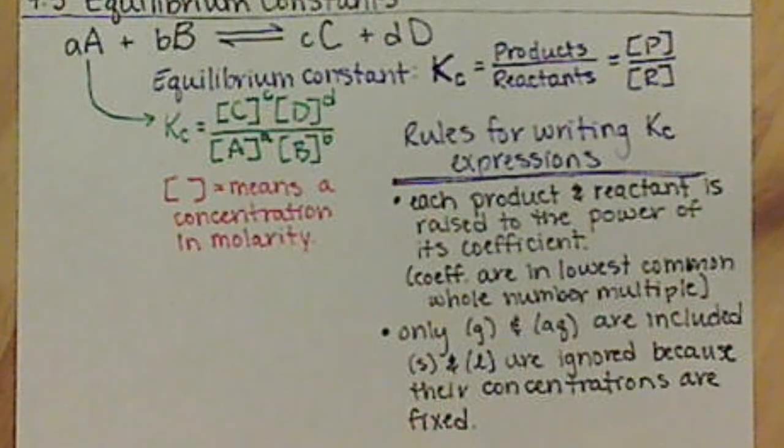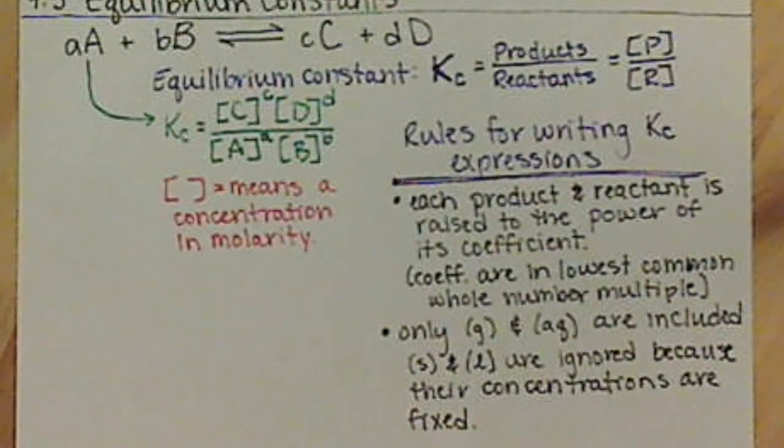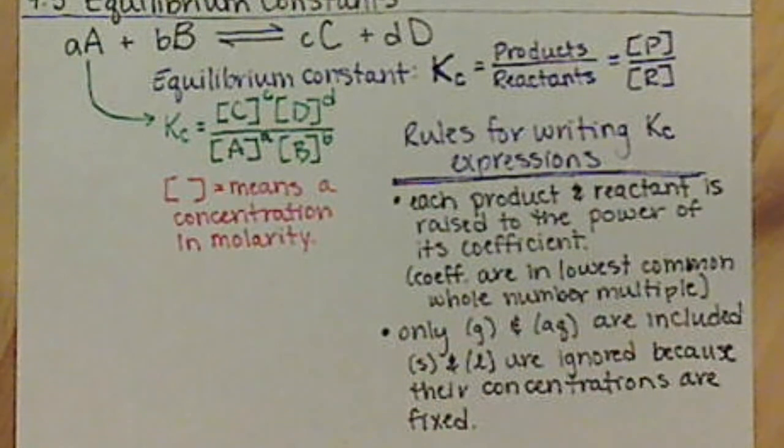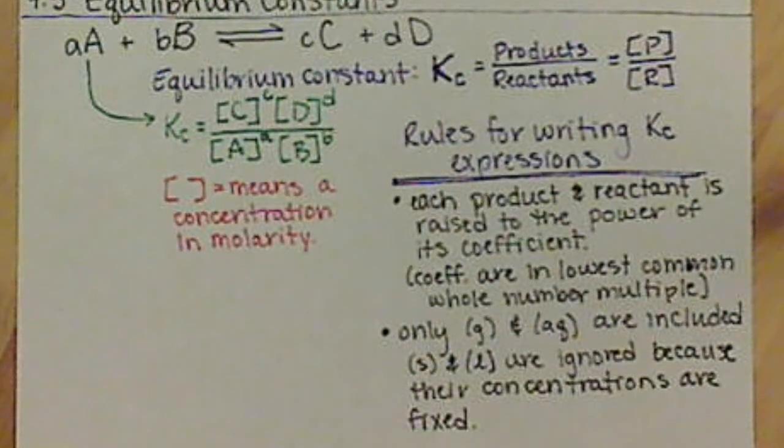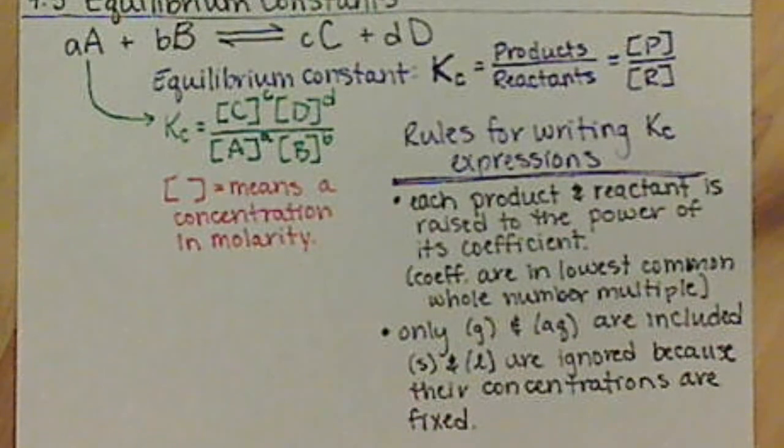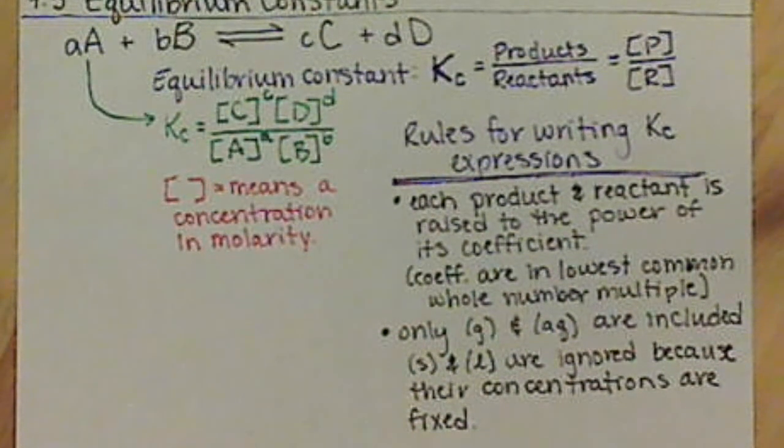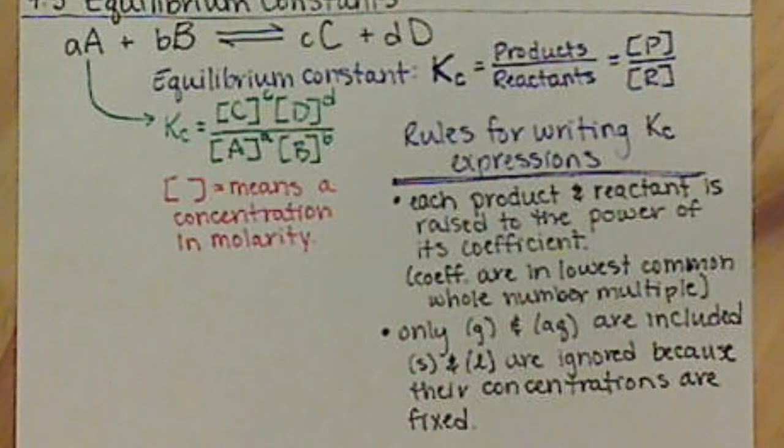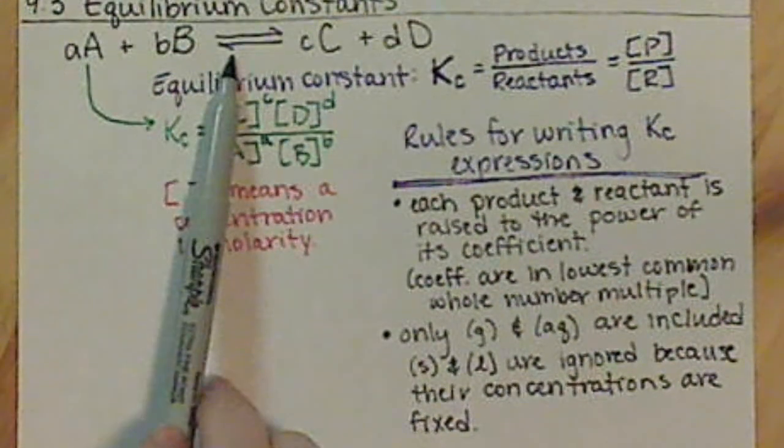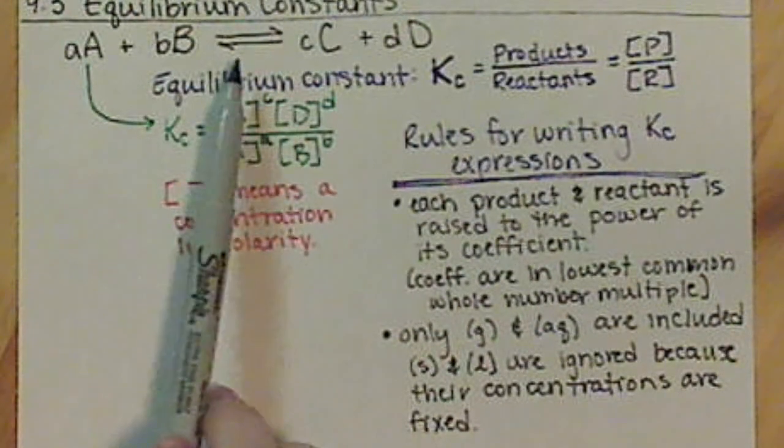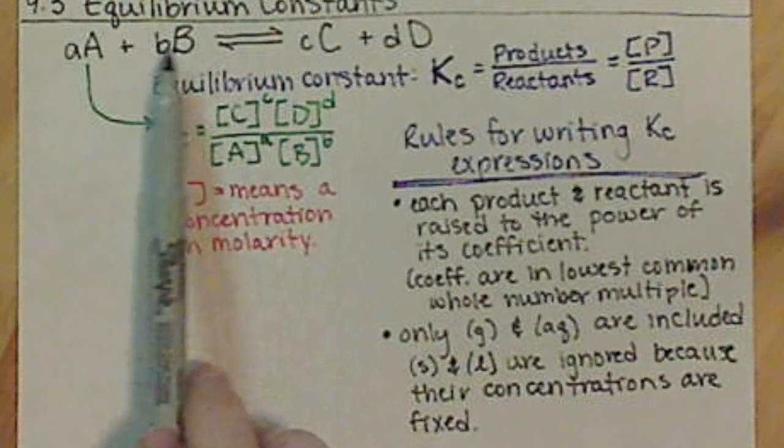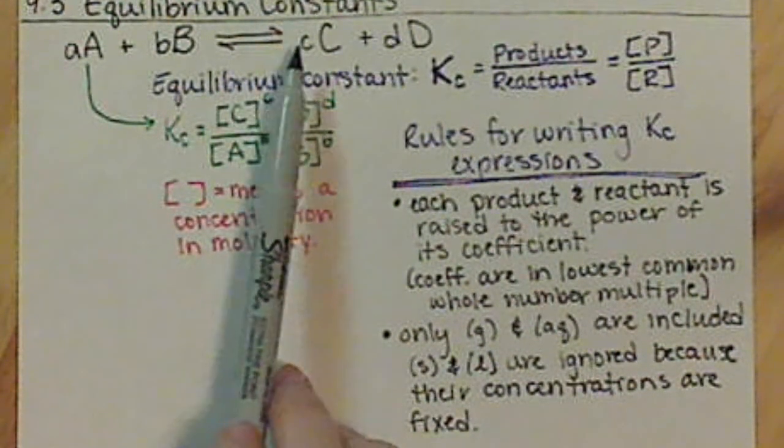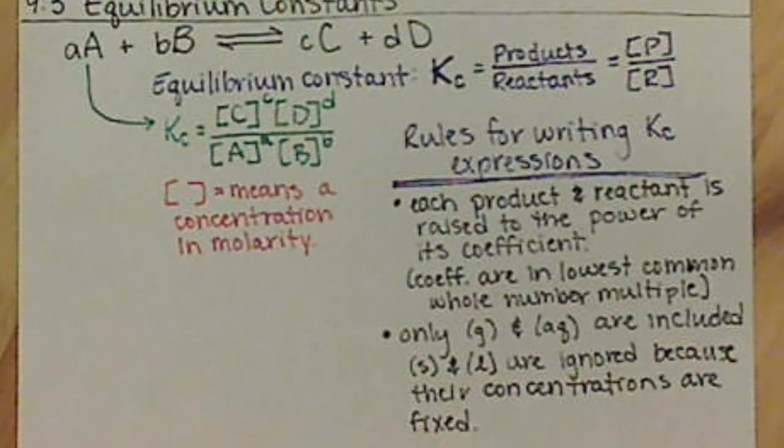Same thing for a solid. If you have a brick of lead, how do you make that lead more concentrated? You can't compress it. Solids are incompressible, so you can't make it more dense. Its concentration is fixed. It's constant. It can't change. So in an equilibrium, if we have a solid and a liquid, doesn't matter what's happening going back and forth in that reaction, the concentration of that solid or that liquid stays the same no matter what. The equilibrium does not depend on solids and liquids.